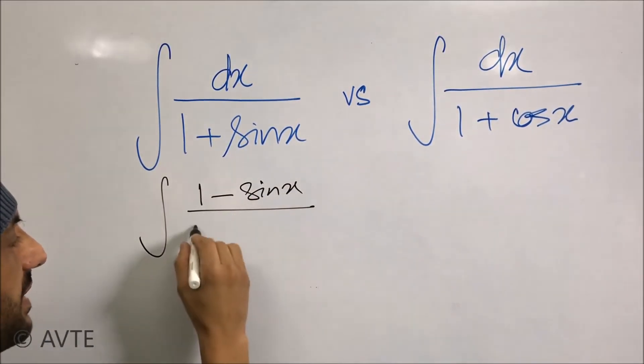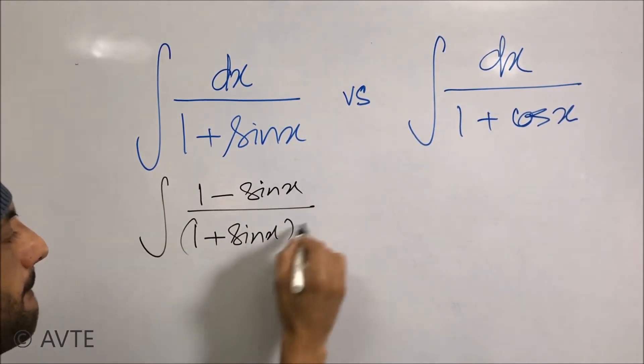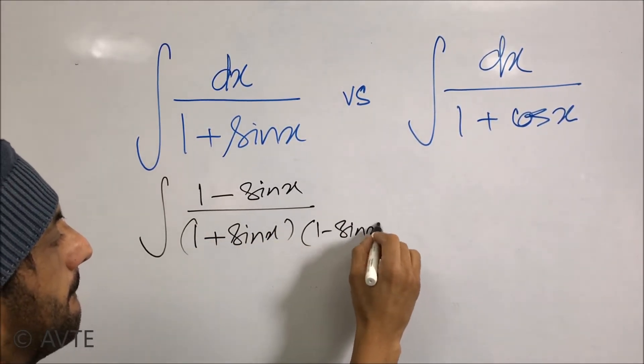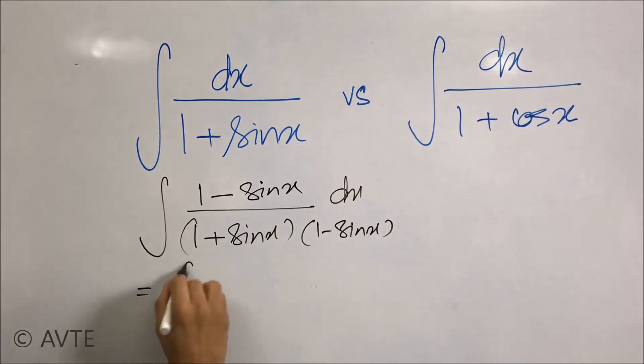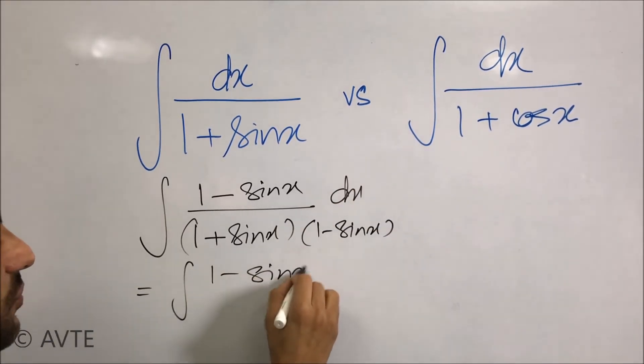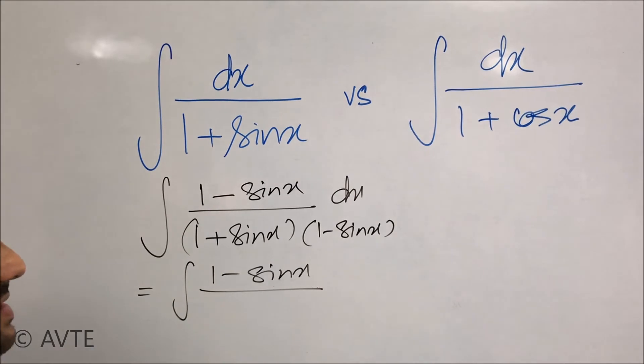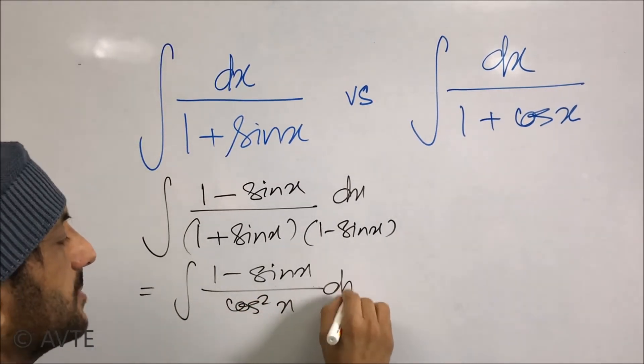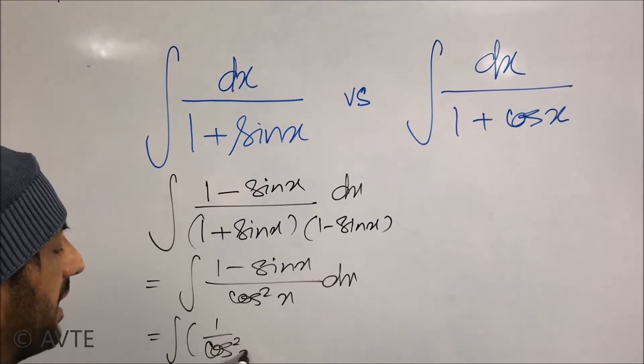And this is (1-sin x)/(1-sin²x), which is just cos²x. And you can split this into two parts.